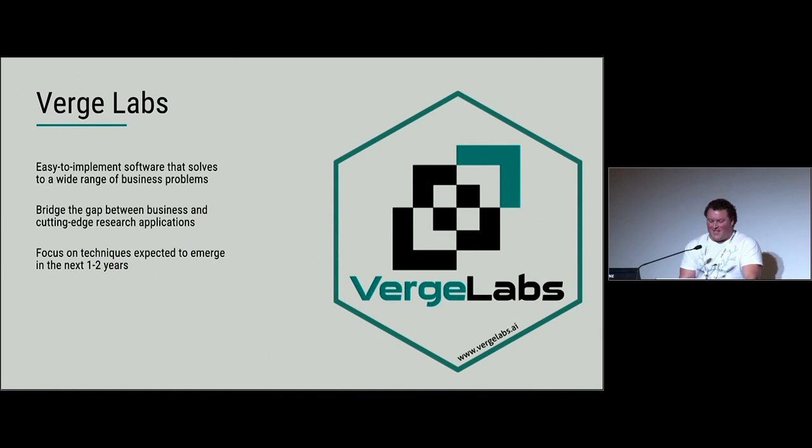Basically, the idea with Verge Labs is we wanted to form a company to do interesting things in machine learning. We're based down in Sydney. The main concepts are providing easy-to-implement software, like the Electron first talk we saw, bridging the gap between business and cutting-edge research, and focusing on techniques we think are going to be a big deal in the next one to two years.